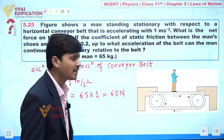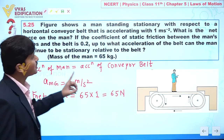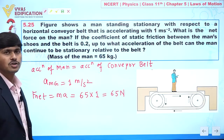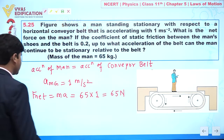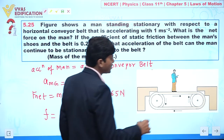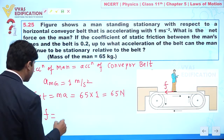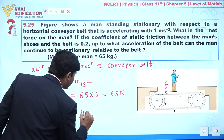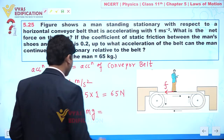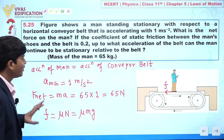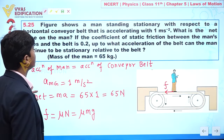Now for the second part: the coefficient of static friction between the man's shoe and the belt is 0.2. What acceleration of the belt allows the man to continue to be stationary? Since the belt is going in one direction, friction force acts in the opposite direction. The friction force is equal to mu times mg.